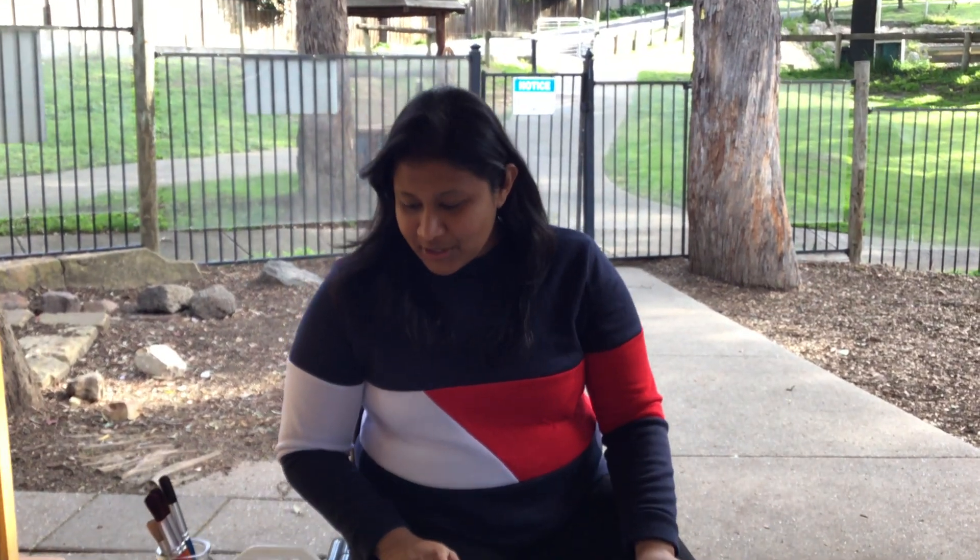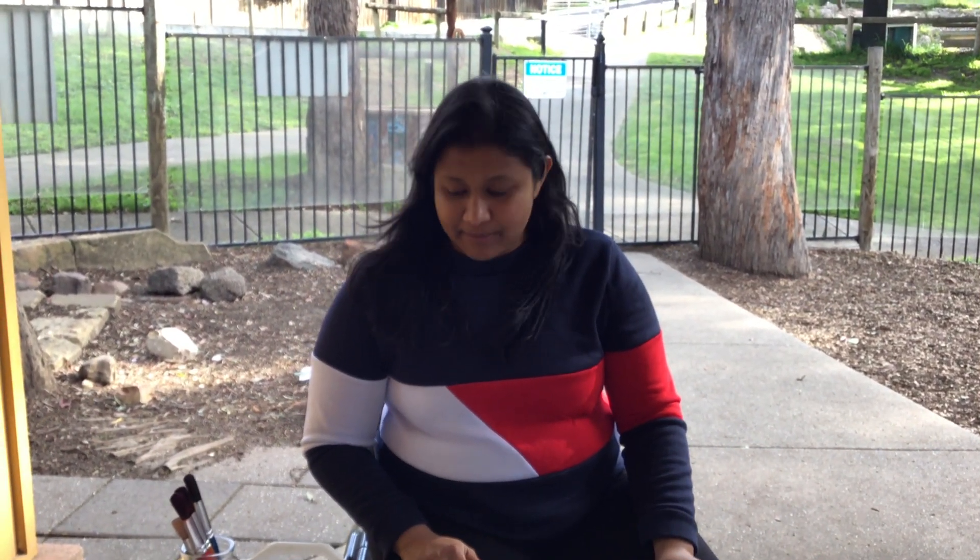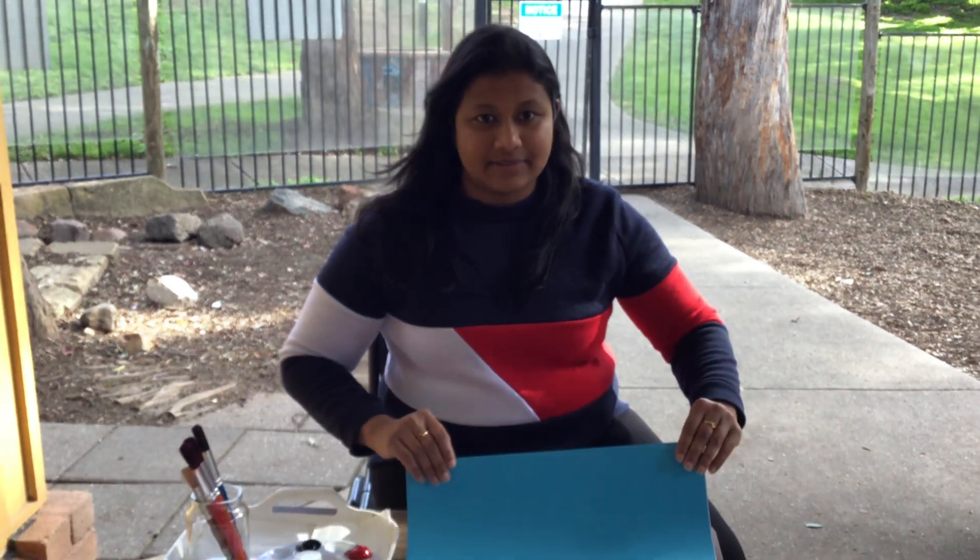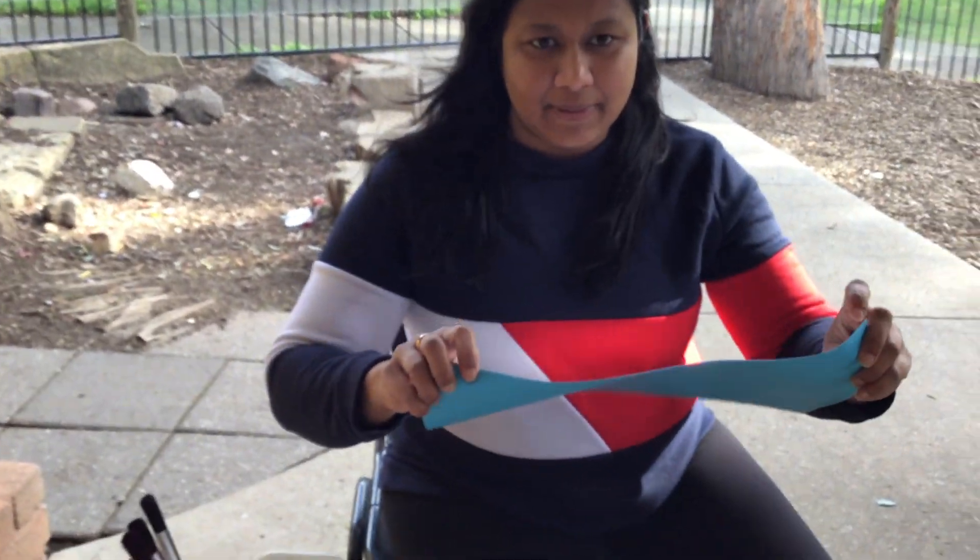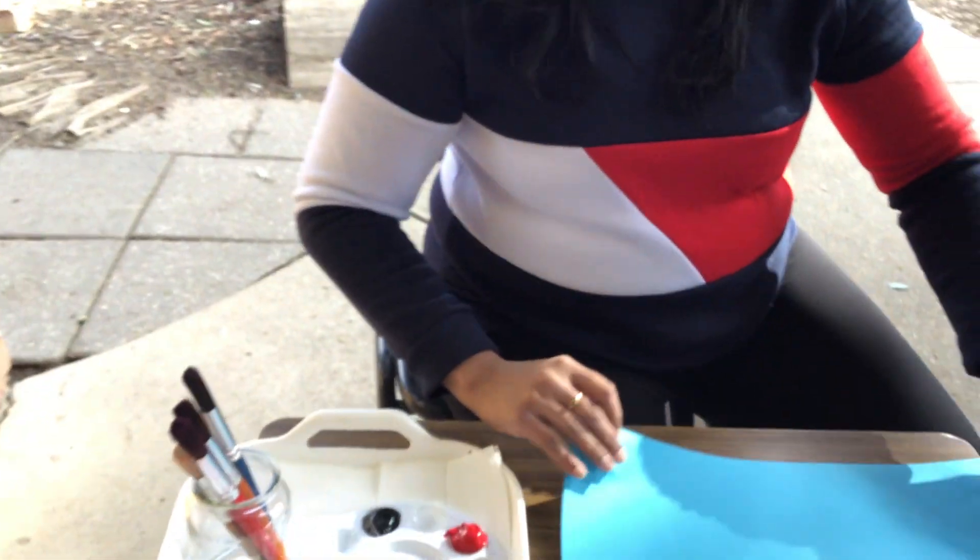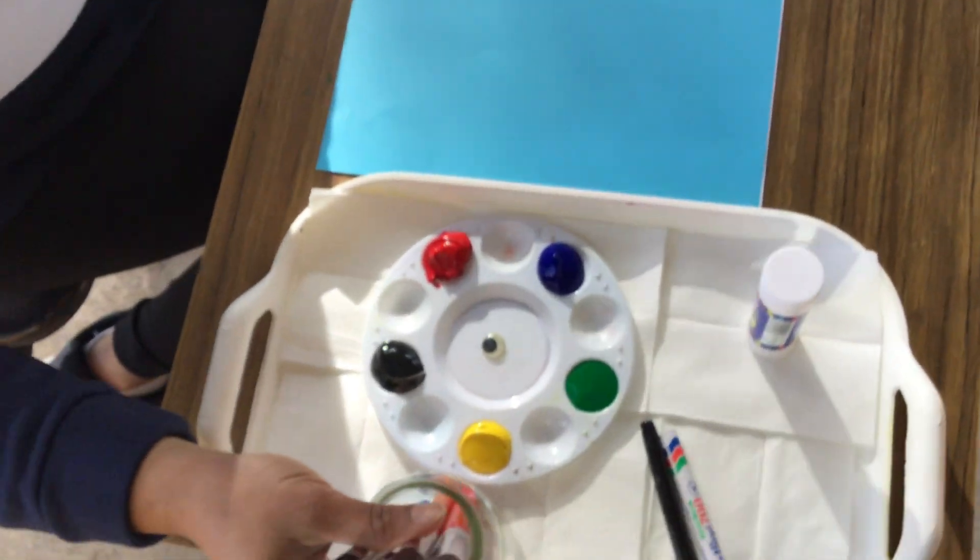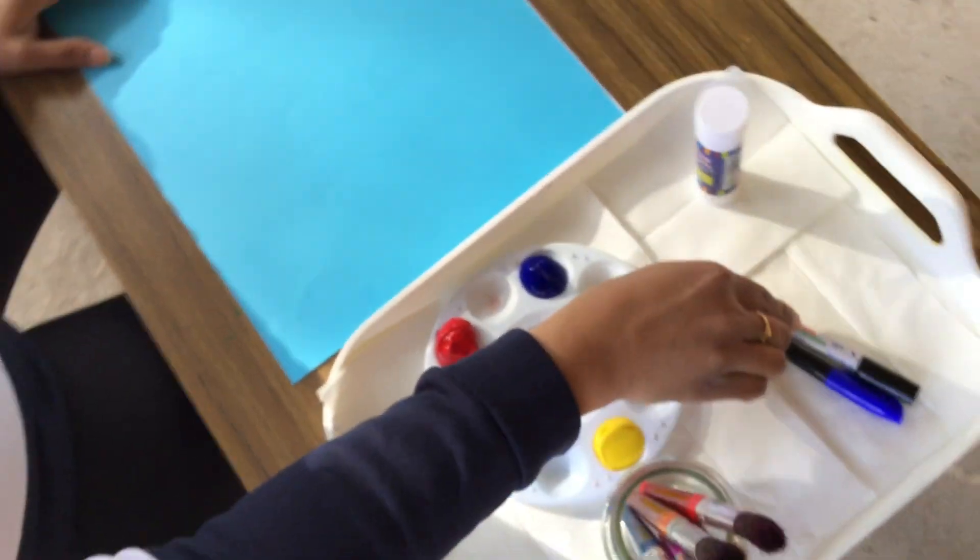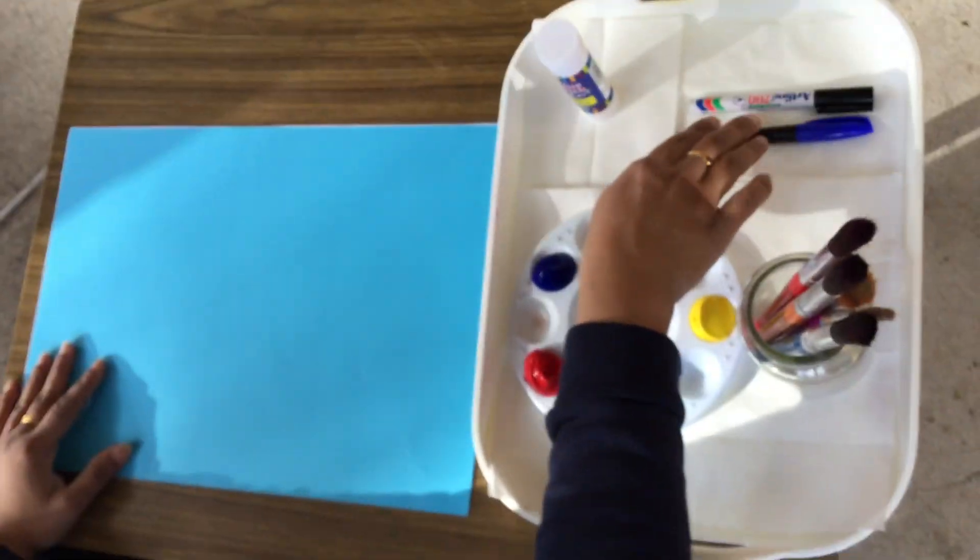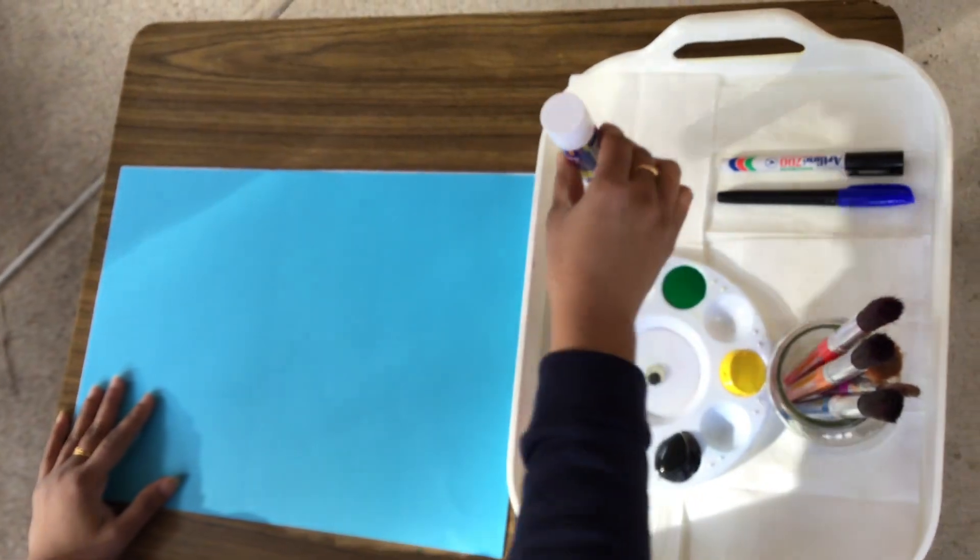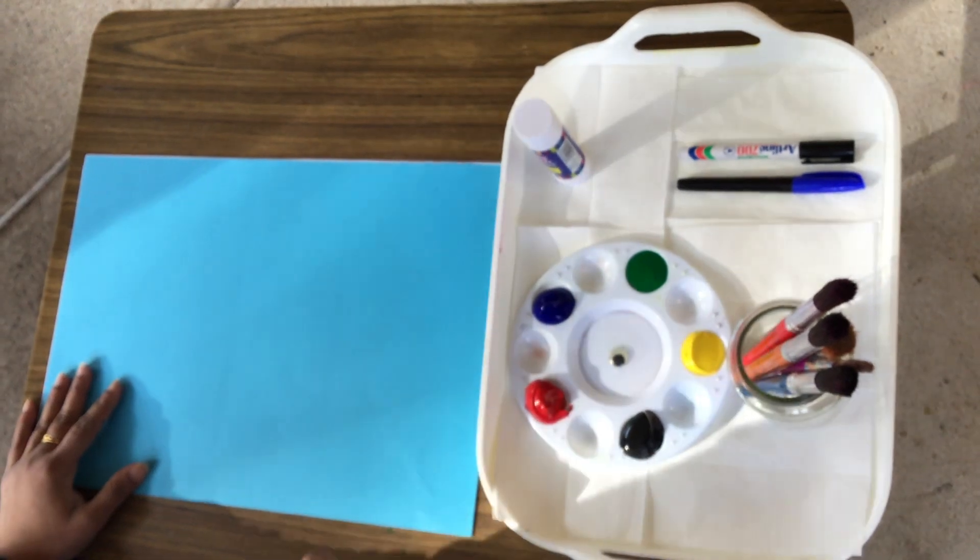Hi, I'm going to show you how to do a fish using paint. So you need colored paper and then some paint and paint brushes, some textures, black and blue, glue stick, and a googly eye.